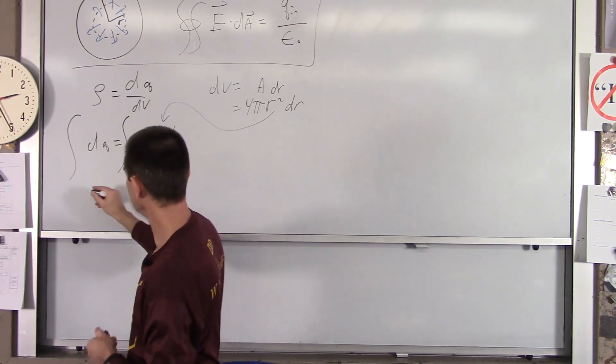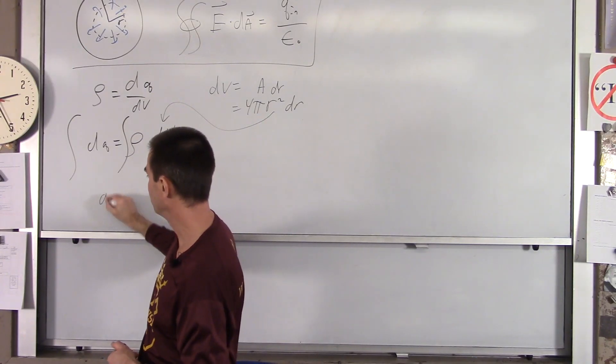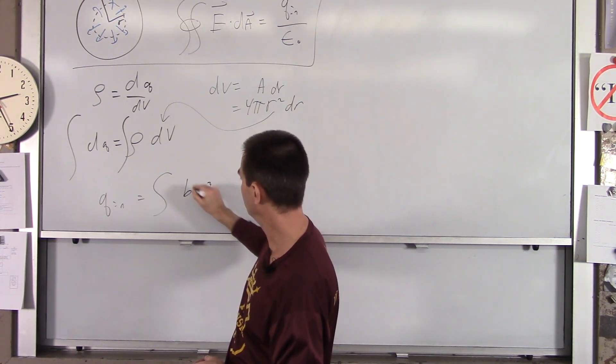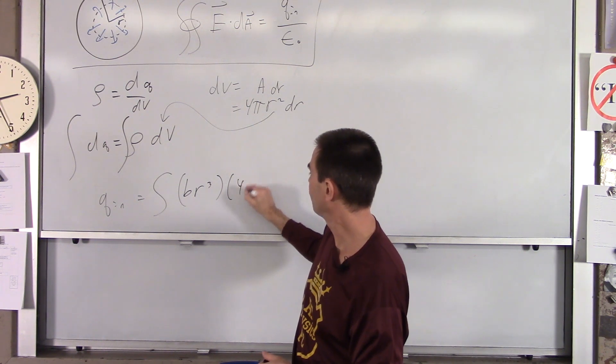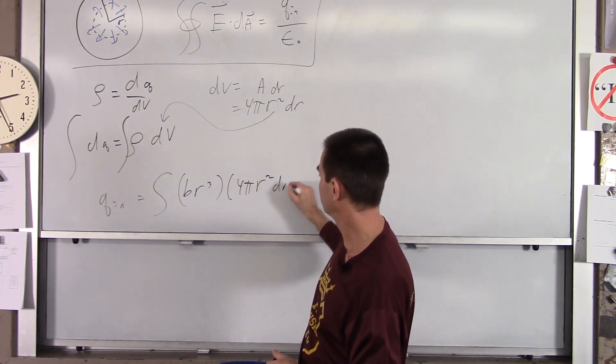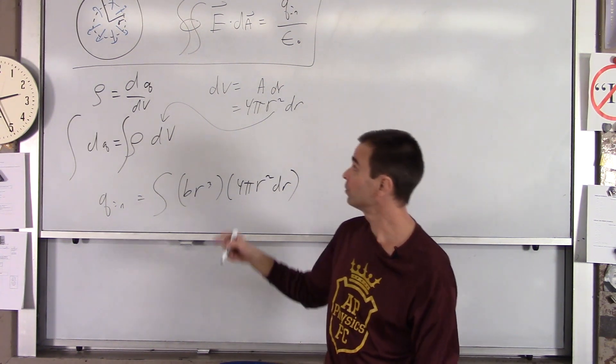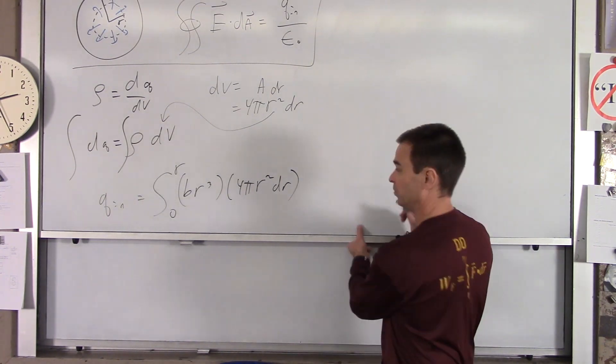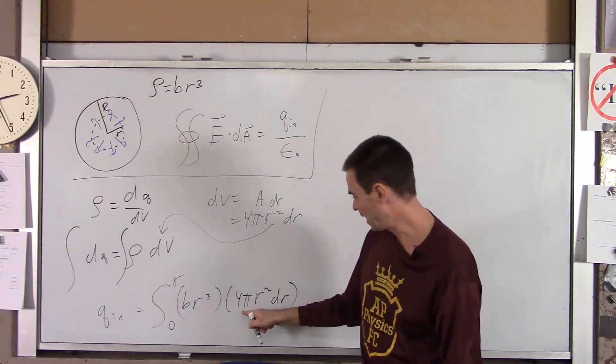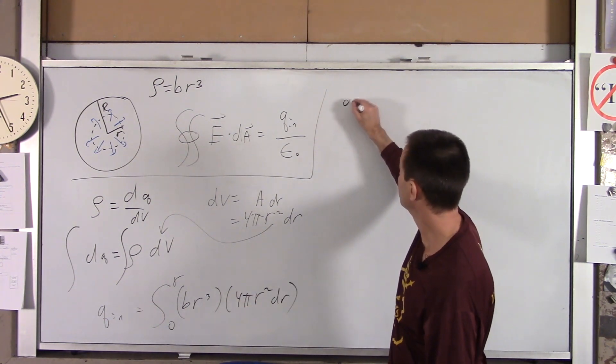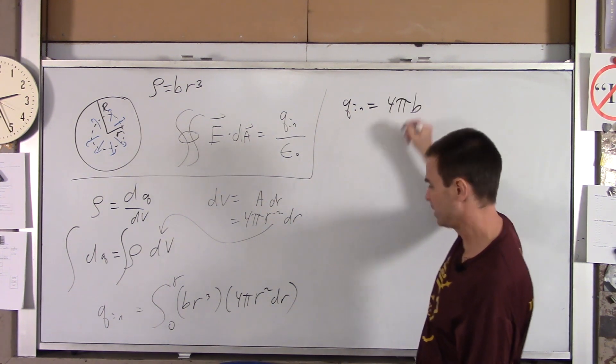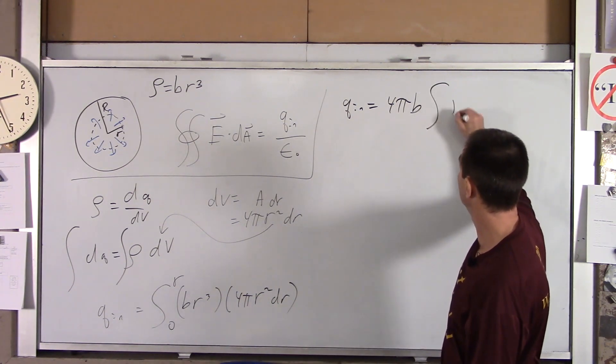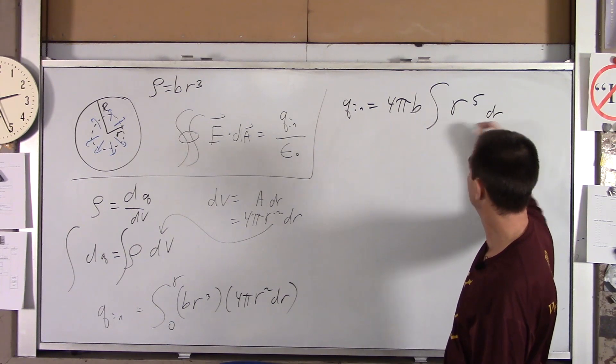So your dQ, which when we integrate that will become q_in, is going to equal the integral of rho, which is br cubed times dV, which is 4 pi r squared dr. And r goes from 0 to little r.